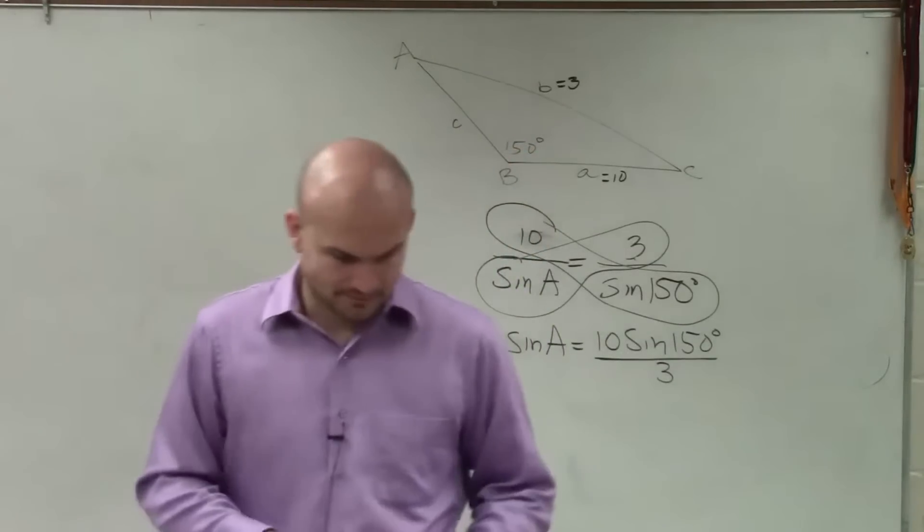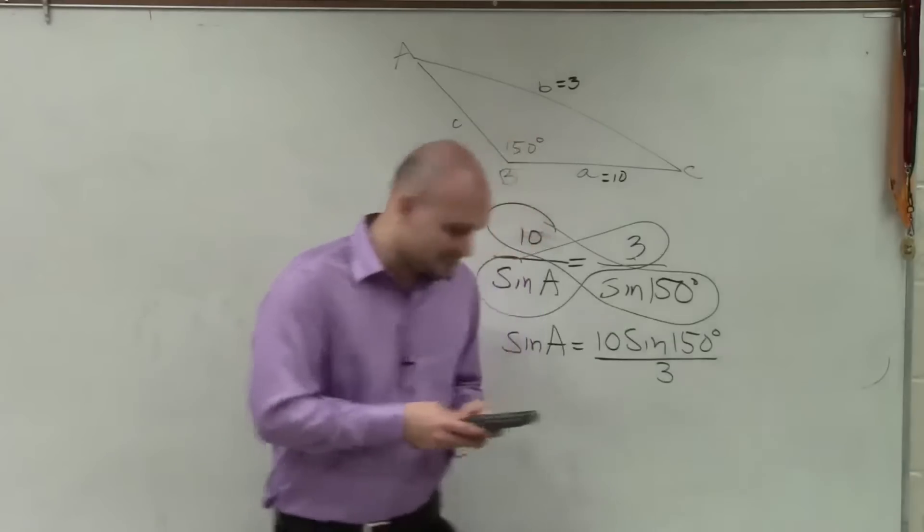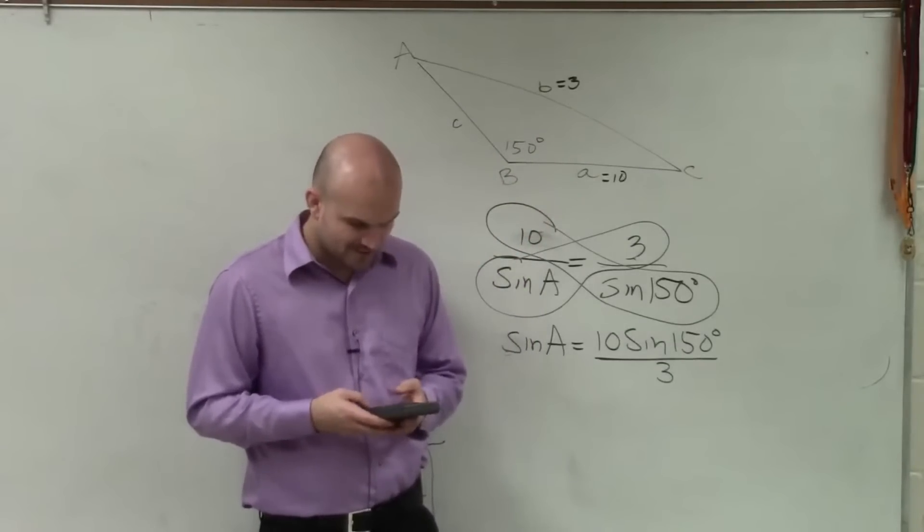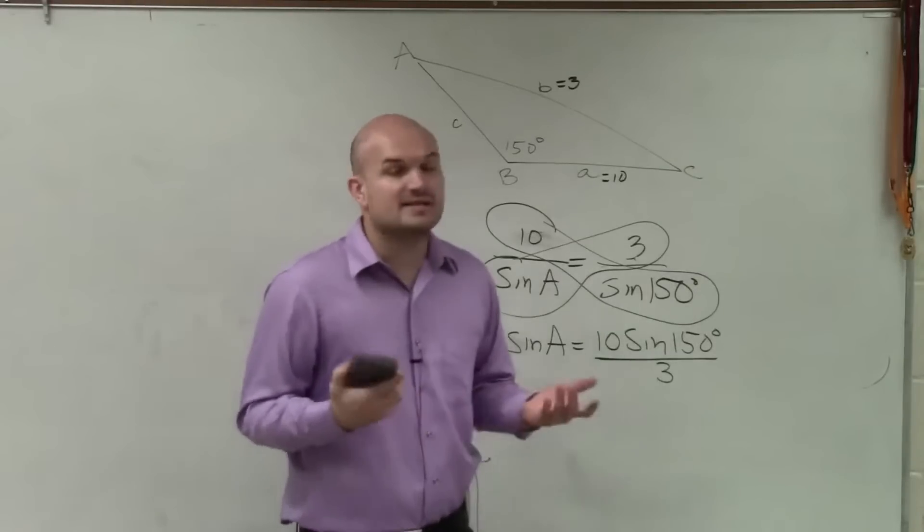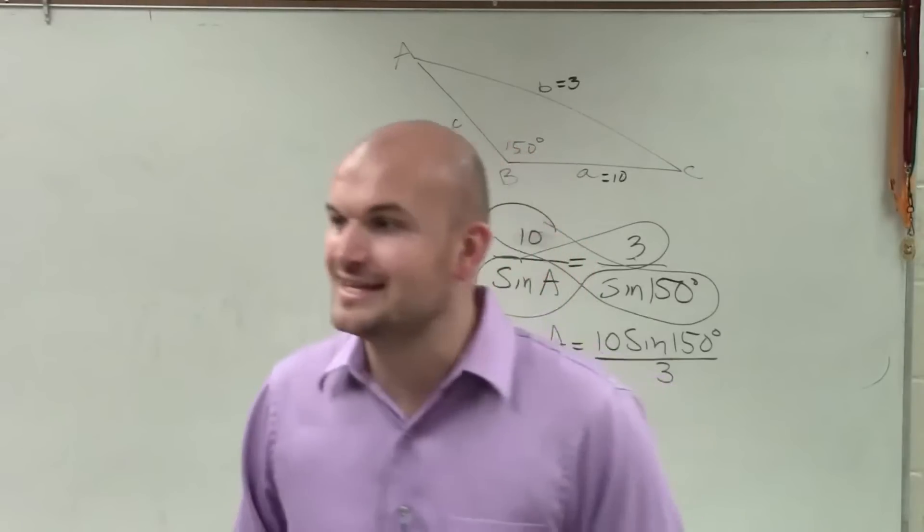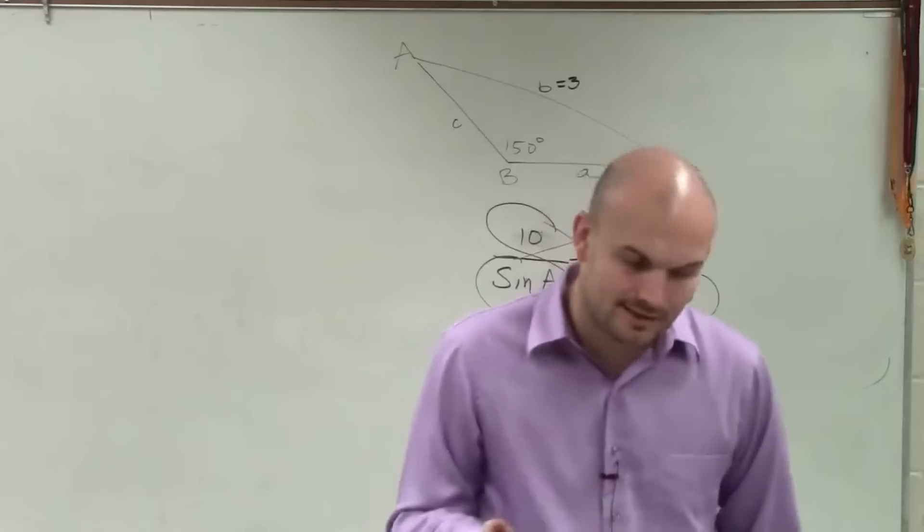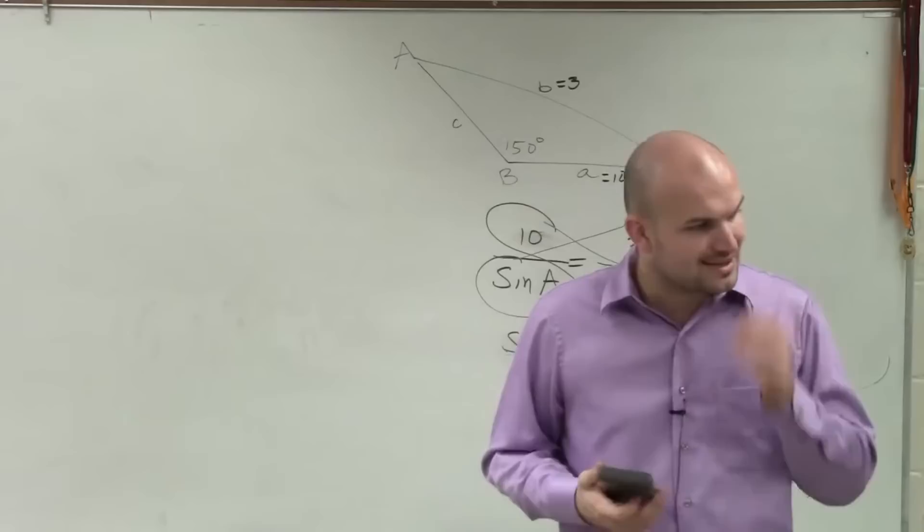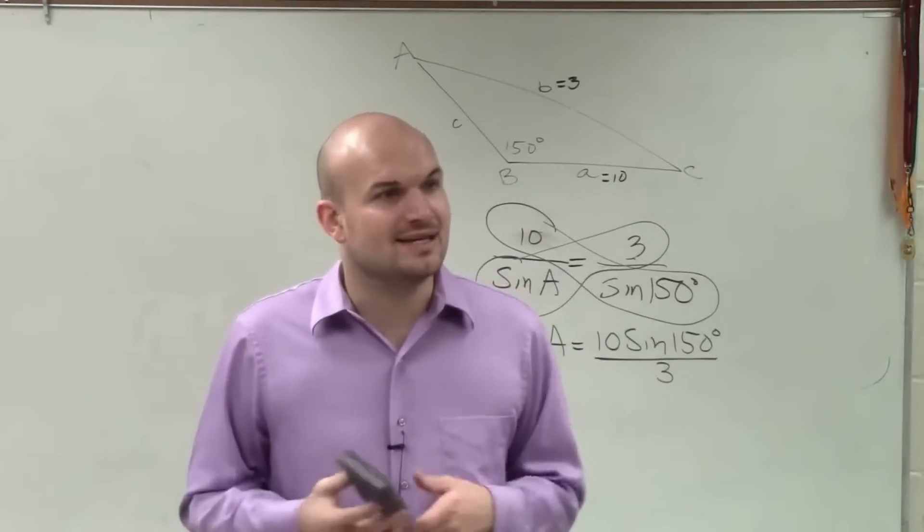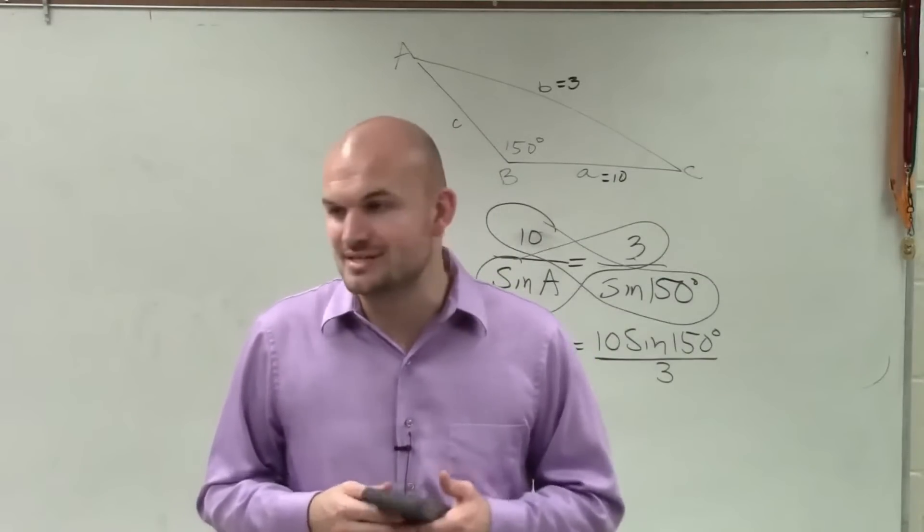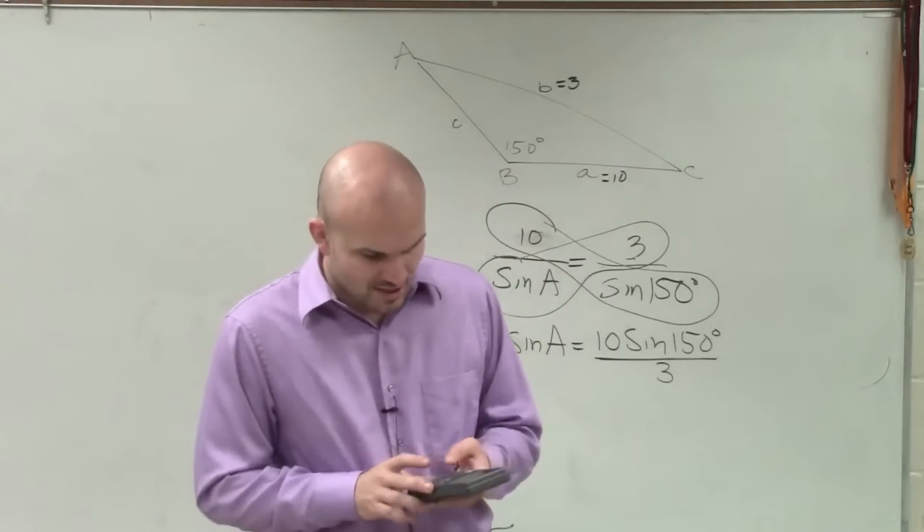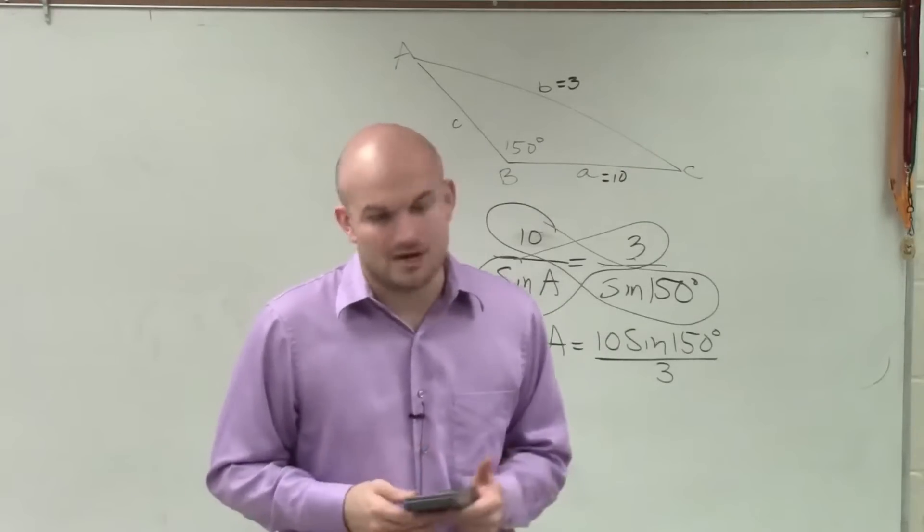So now, I go to my calculator, and to solve for this one, I type in 10 times the sine of 150, and I divide it by 3. Now, one thing, since we didn't do 4.7 or 4.8 this year, you guys don't really understand the meaning of trying to take the inverse of 1.6. So unfortunately, I can't really go through it on why. I can give you guys a quick little representation. But you cannot take the inverse of 1.6. 1.6 is not within the domain of our inverse sine function.